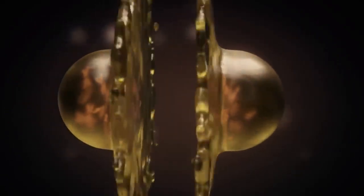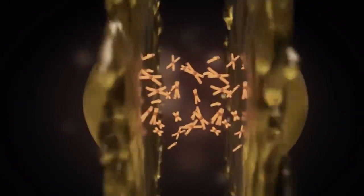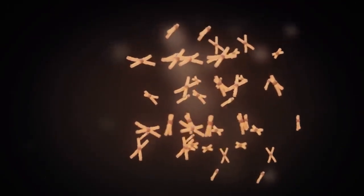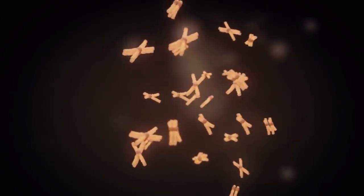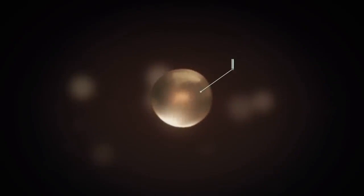Finally, syngamy occurs in which the pronuclei dissolve and the chromosomes of male and female are properly aligned in the spindle apparatus. Now the cell is called a zygote, which is the very first cell of the new human being.